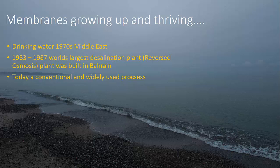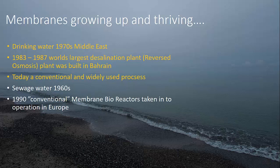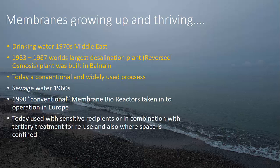Today, membranes for freshwater treatment are a conventional and widely used process. On the wastewater side, sewage water treatment started in the 1960s and had a very fast development. By 1990 it could be considered conventional for membrane bioreactors to be taken into operation in Europe. Today membrane bioreactors are used when you have a very sensitive recipient, in combination with tertiary treatment for reuse, or very importantly, if a plant needs to be expanded.